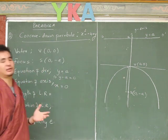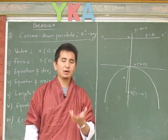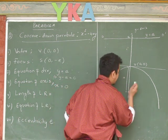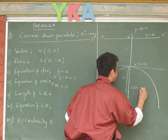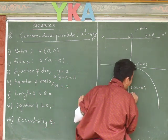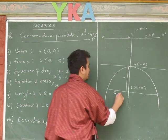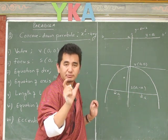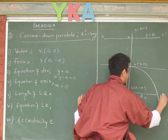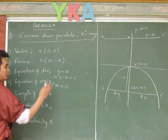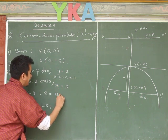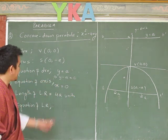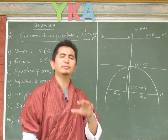Now the length of the latus rectum remains the same for all parabolas. The latus rectum is the line passing through the focus. Each semi-latus rectum has length 2a, so the full length of the latus rectum is 2a + 2a = 4a units. This holds for all four parabolas — concave right, left, up, or down.